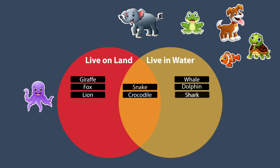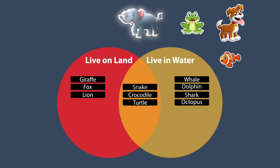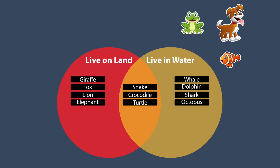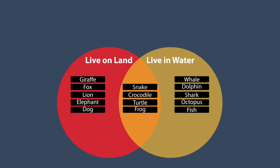Sharks live in water. Turtles can live in both. Octopus lives in the water. Elephant lives on land. Frogs can live in both, so they go in the overlapping part. Fish live in water, so they go in the yellow circle. Dogs live on land, so they go in the red circle. We've sorted all the animals using a Venn Diagram. The animals that live on land are in the red circle, those that live in water are in the yellow circle, and those that can live in both are in the overlapping part.